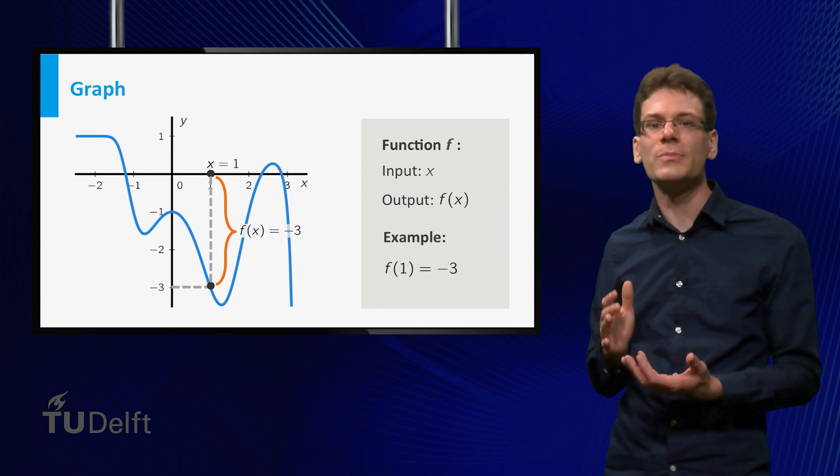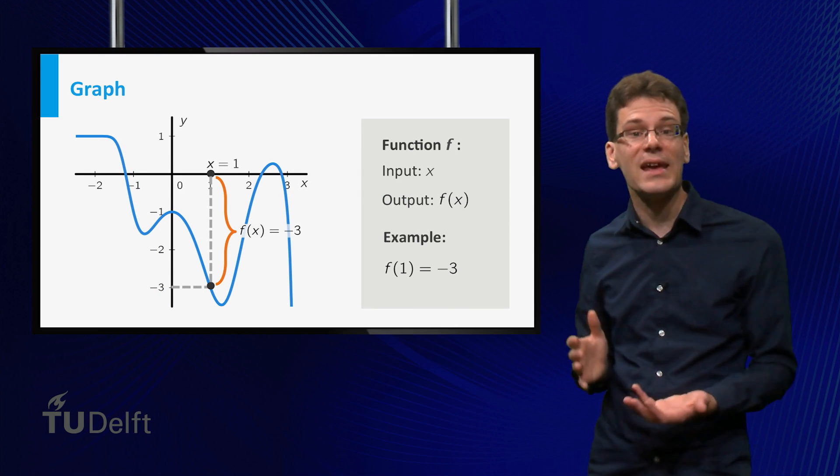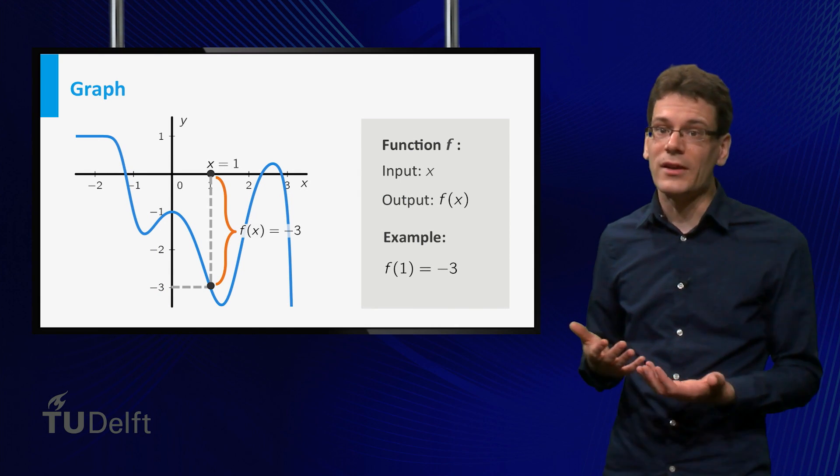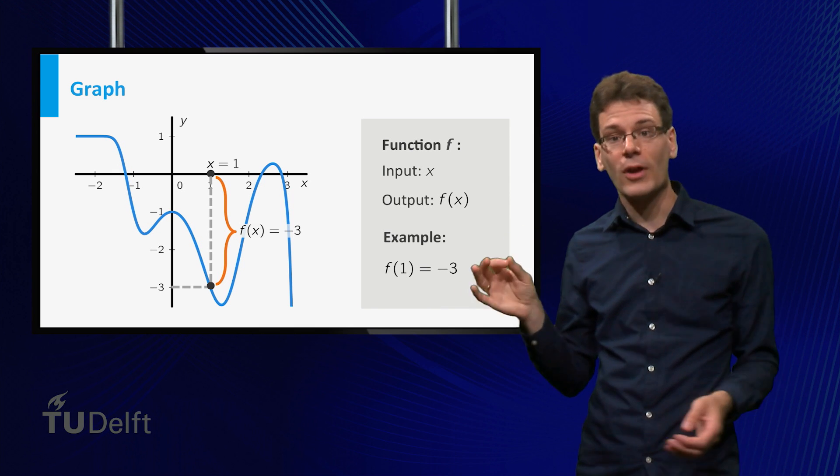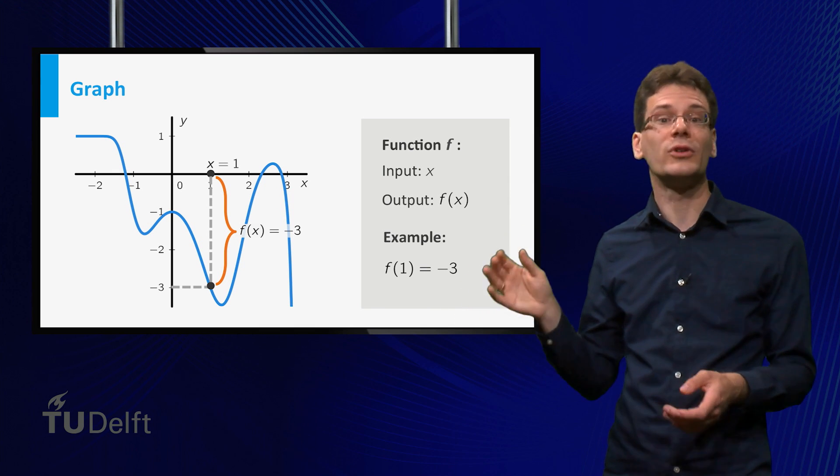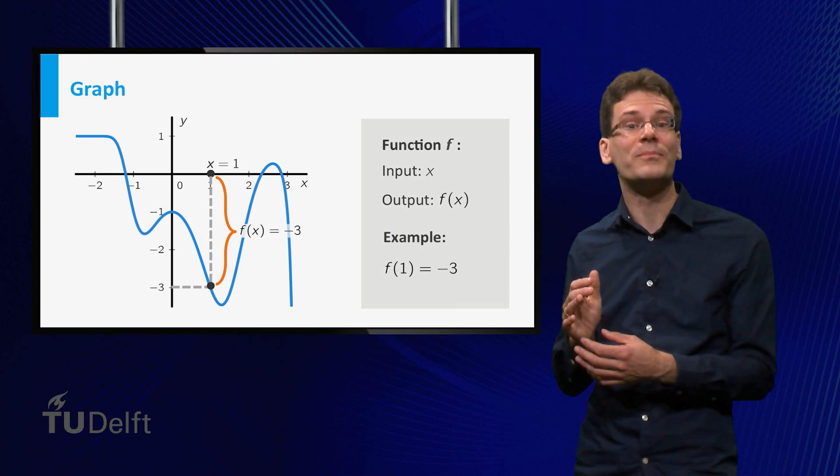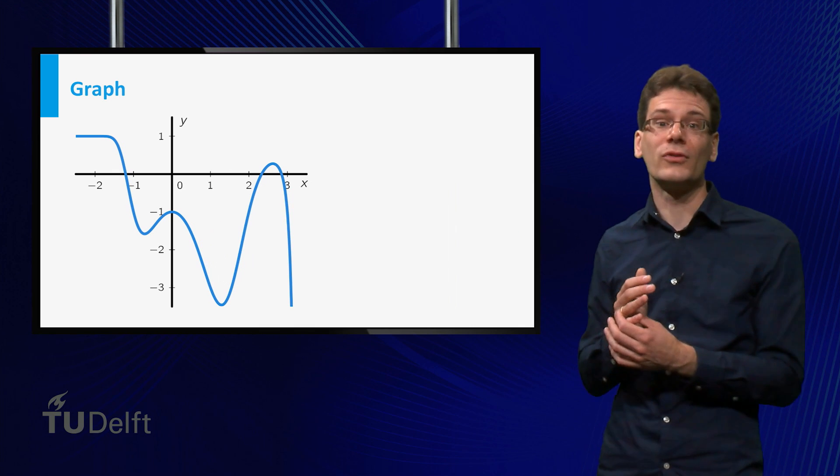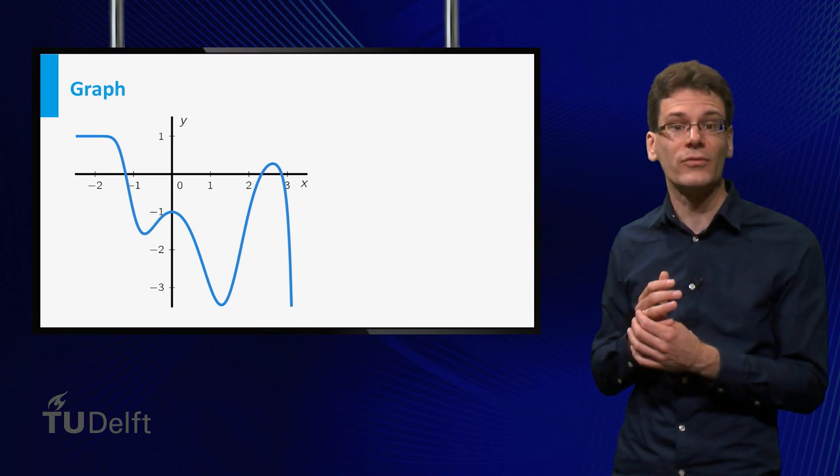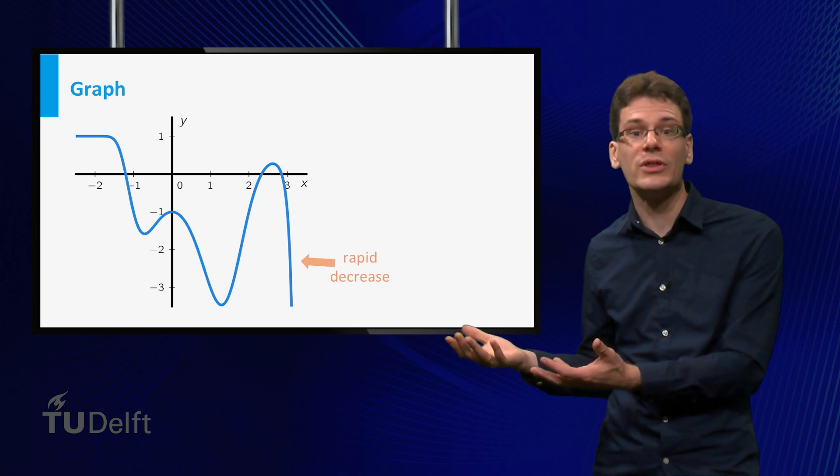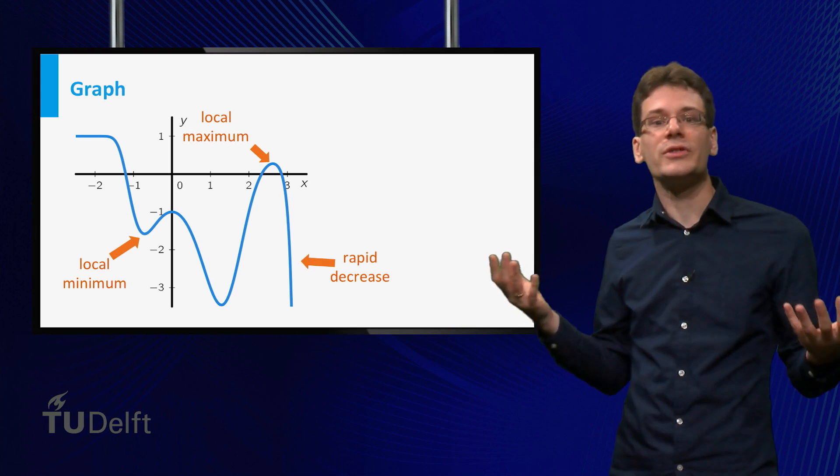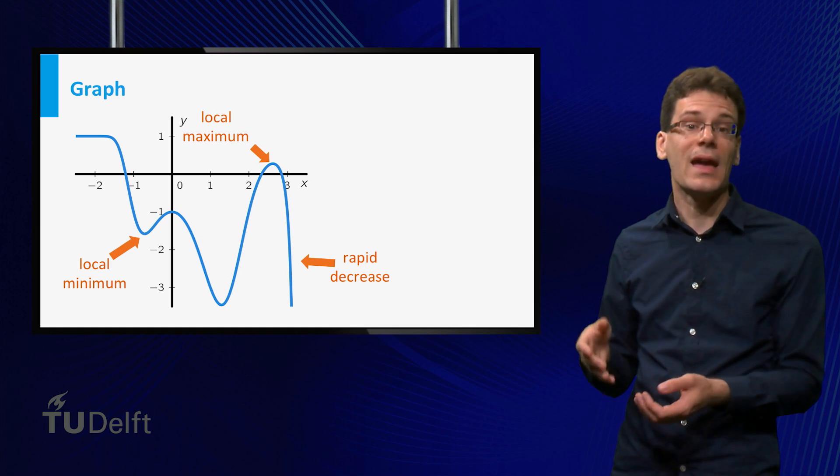In a graph you can represent much more information on a function than in a table. Of course, you cannot make a graph of the whole real line, but often you do not need the full real line to capture the interesting behavior of a function. Another advantage of a graph is that it clearly shows properties of the function like where is it increasing or decreasing, where does it change rapidly, where slowly and where are the extrema.